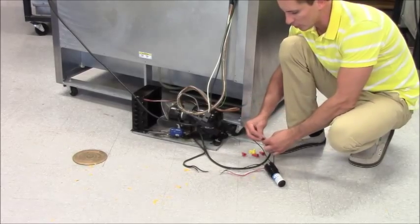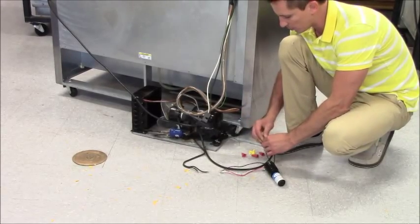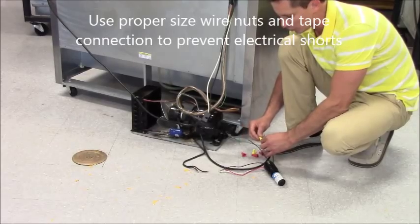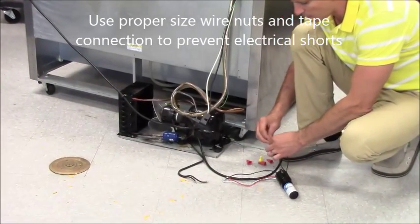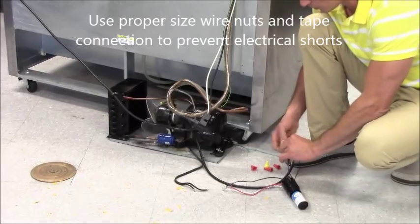The very first thing you're going to do is hook up your black to your hard start kit, make sure your unit is unplugged, and then you're going to hook up the white wire to the other black wire of the hard start kit.